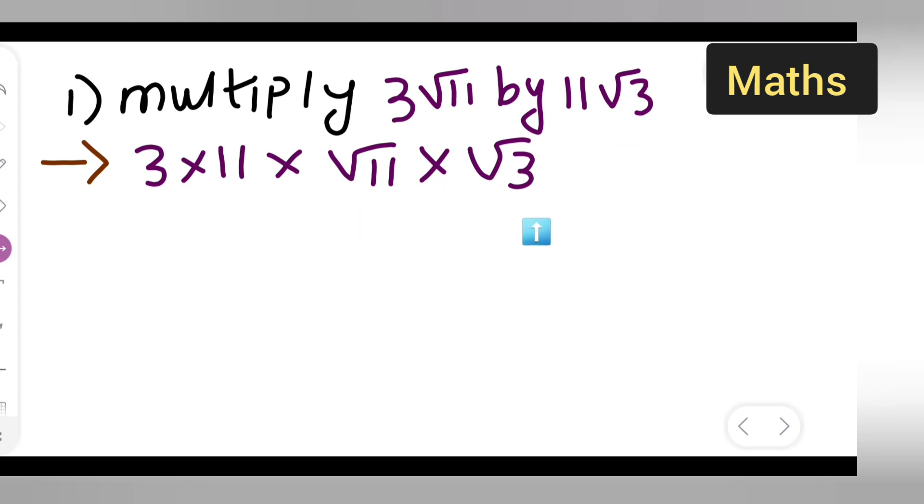So 3 times 11, you will get 33, right? So write down 33 multiplied by root 11 multiplied by 3. Basically what you all are going to get is now this is equal to